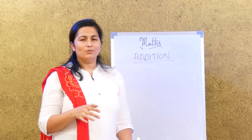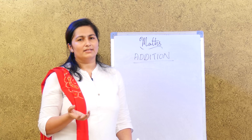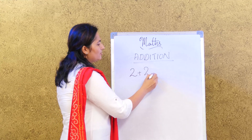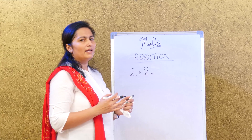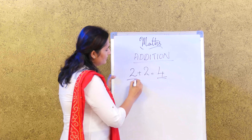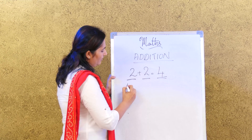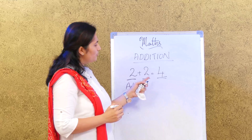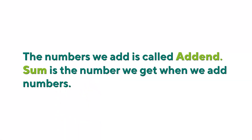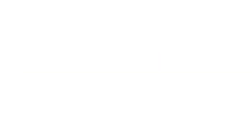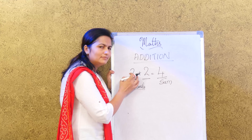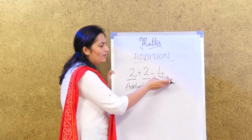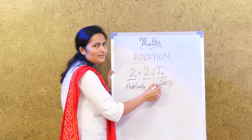Mom tells you to go and buy two tomatoes and two onions. So you add the two tomatoes and the two onions, and you are going to have four things in your bag when you come back. These two numbers we are adding are called addends. Two and two are called addends. The answer or the result is called the sum. Always remember: the two numbers we are adding are called addends, and the answer is called the sum.